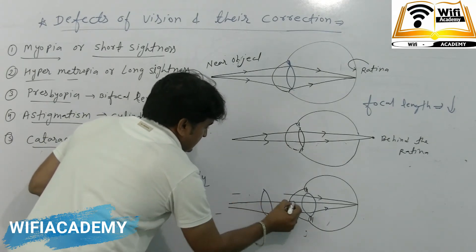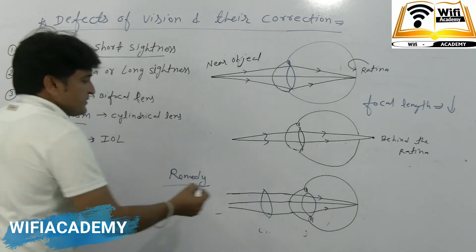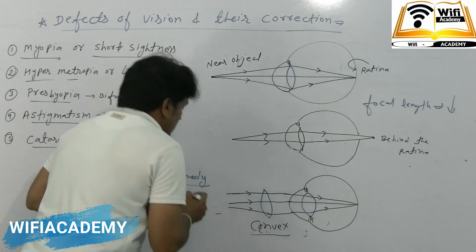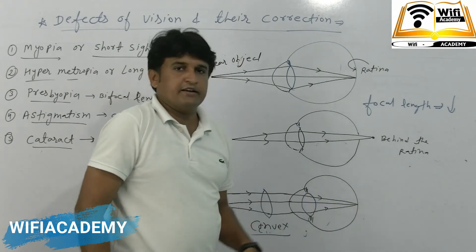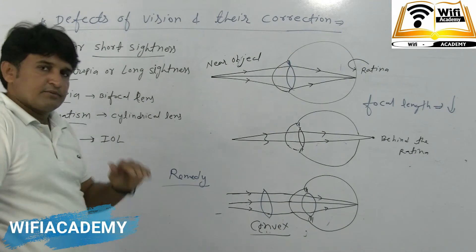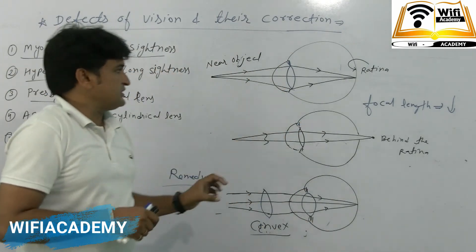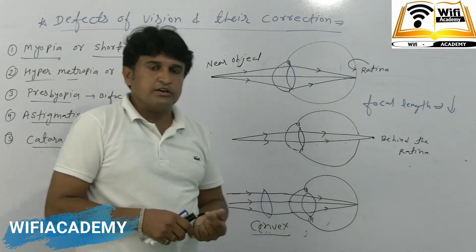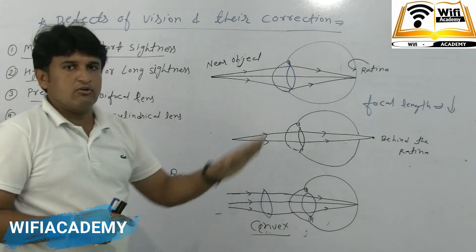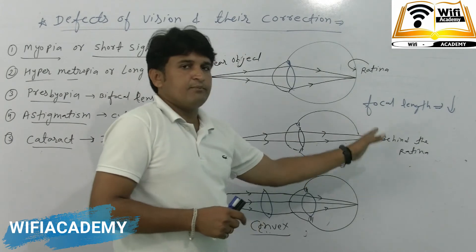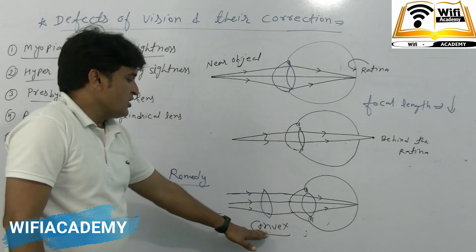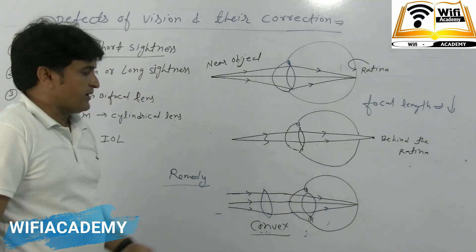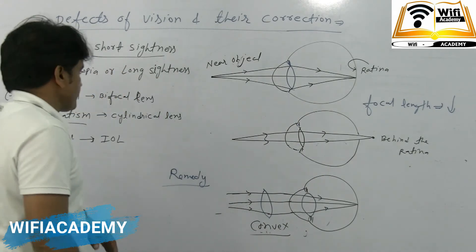After we put a convex lens, it converges the light more, so the image is correctly formed on the retina. The object becomes clear. So hypermetropia is corrected using a convex lens.